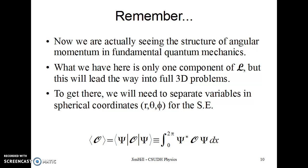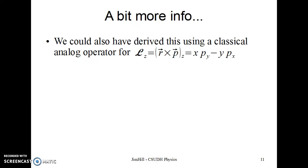So we're actually cracking into why the things he had to propose as postulates, because he didn't know, have a deeper underlying reason for being true. So that's kind of a big deal already. What we have here is only one component of the angular momentum, but that's going to be our way to break into the full 3D problems. Frankly, the 3D problems, we need to do separation of variables and spherical coordinates of r, theta, phi, the Schrodinger equation. That's not as easy as the other separation of variables we've seen.